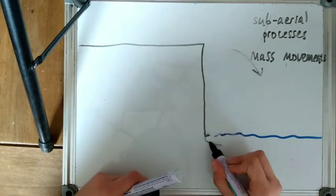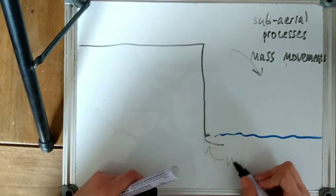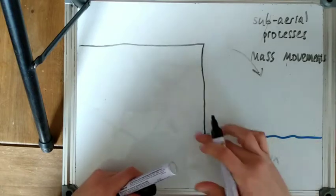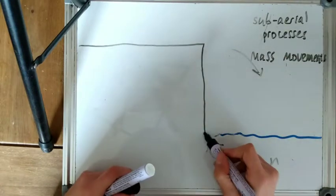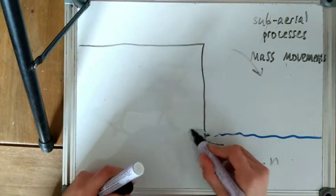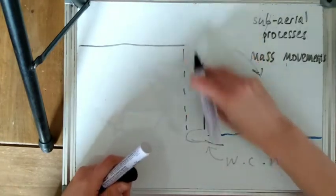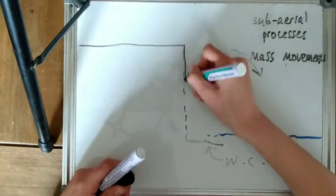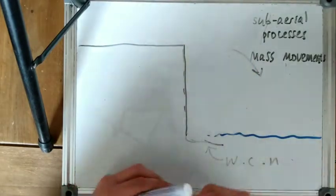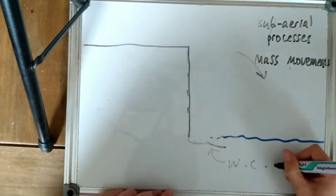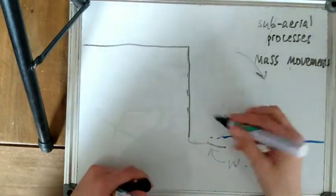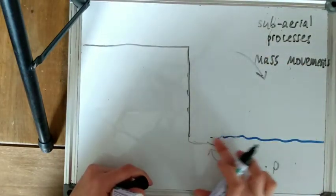So a little wave cut platform here will form. I accidentally wrote WCN as wave cut notch but it's a wave cut platform here, otherwise known as shore platform. Then this process of undercutting and rock fall of the cliff face will result in the cliff face to continue receding and this shore platform to increase in length.